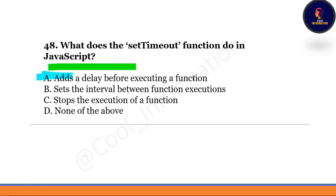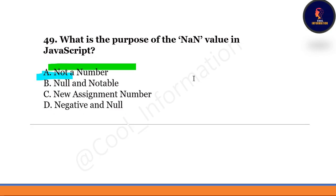Next question: what does the setTimeout function do in JavaScript? Option A is adds a delay before executing a function. Option B sets the interval between function executions. Option C stops the execution of a function. Option D is none of the above. The correct option is option A — setTimeout adds a delay before executing a function.